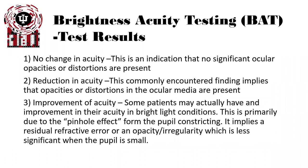There are a couple of different test results that can come from a BAT. The first and most common is no change in acuity — the patient sees the exact same with or without the BAT — indicating no significant ocular opacities or distortions causing glare. The next most common is a reduction in acuity, commonly encountered and implying opacities such as cataracts or distortions in the ocular media. Finally, in very rare situations, improvement of acuity can occur due to pinhole effects from the light causing pupillary constriction, implying residual refractive error or peripheral opacities being blocked out by the small pupil.